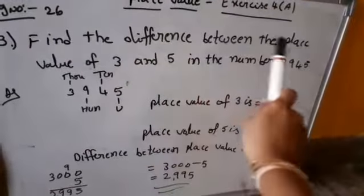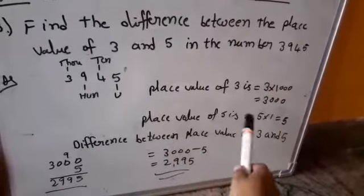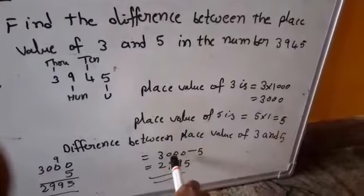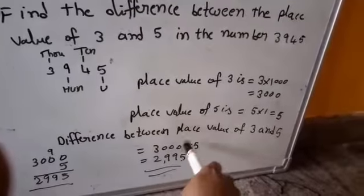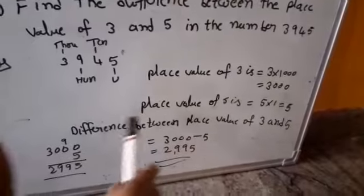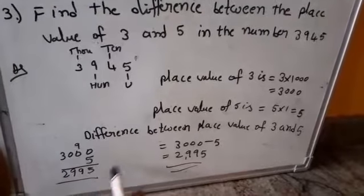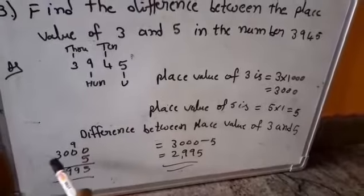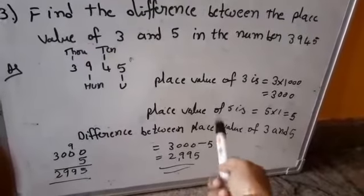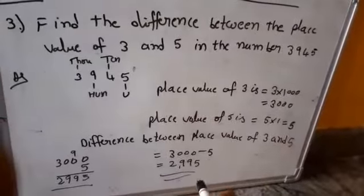Next, what do we have to find? The difference between the place values of 3 and 5. Place value of 3 is 3000. Difference means minus. So 3000 minus 5. Doing the subtraction: carry 1, 10 minus 5 is 5, remaining is 9, bring down 9, bring down 9 again, and the carry gives us 2. So the answer is 2995. The difference between the place value of 3 and 5 is 2995.